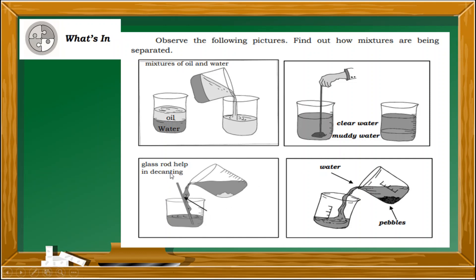A glass rod helps in decantation so that the liquid does not splash directly into the other substance, making the pouring smoother. Here is another illustration — water and pebbles, small stones mixed with water. Since the pebbles cannot float in water, you get another container and slowly pour the water out into another container, leaving behind the pebbles. That is the decantation method for separating water and pebbles.